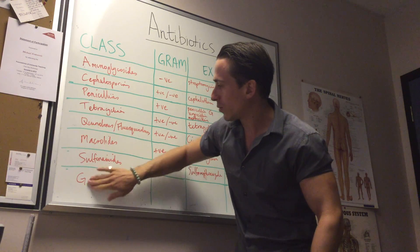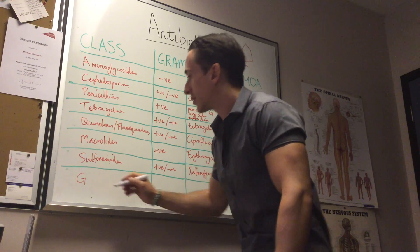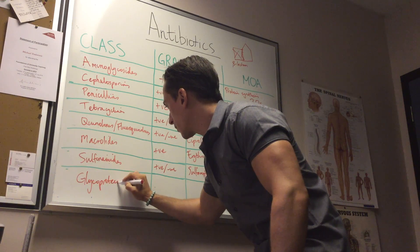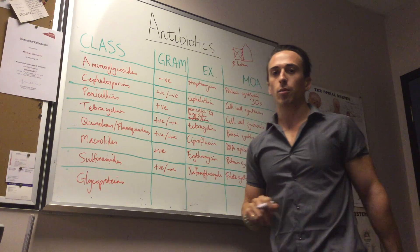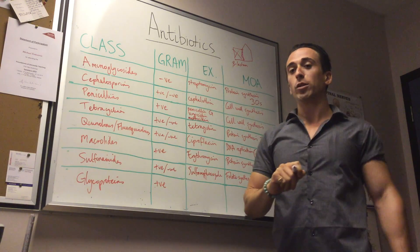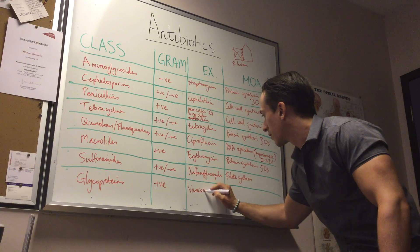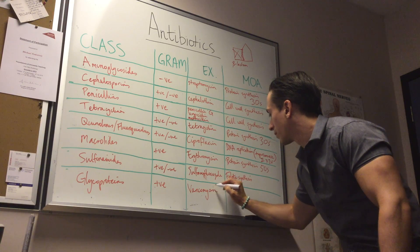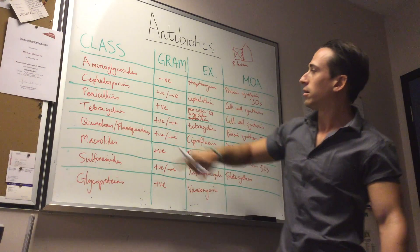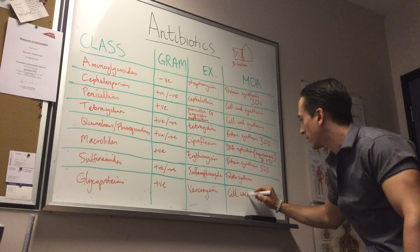'G' represents the glycopeptides. Glycopeptides predominantly affect gram-positive bacteria, and an example is vancomycin. Their mechanism of action is very similar to the penicillins — inhibition of cell wall synthesis.